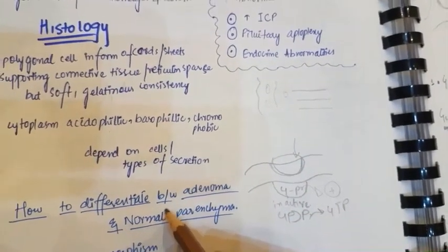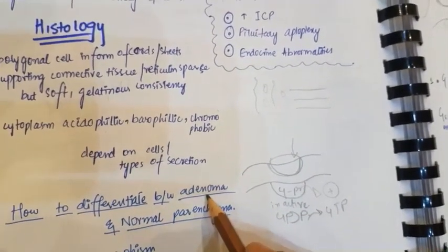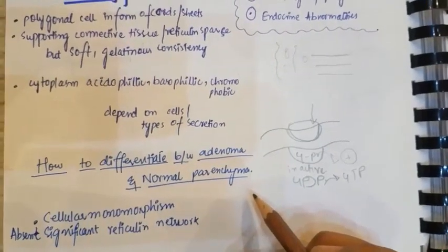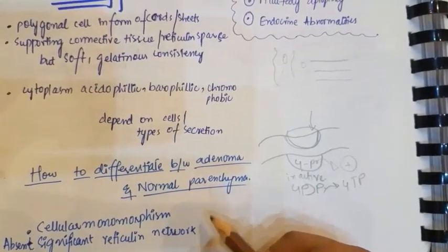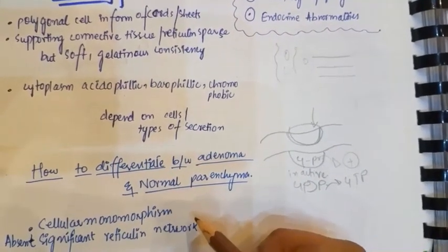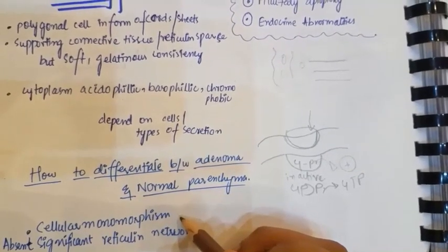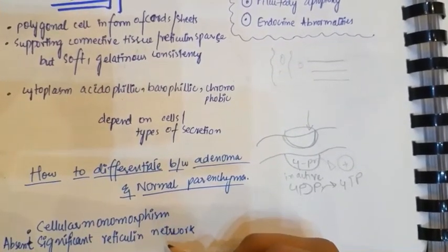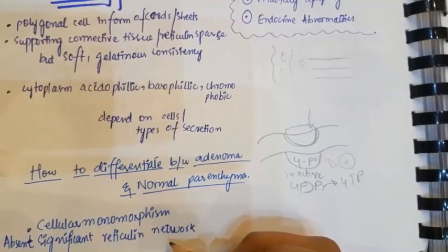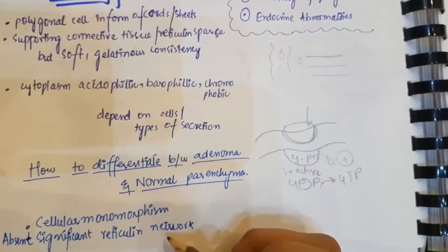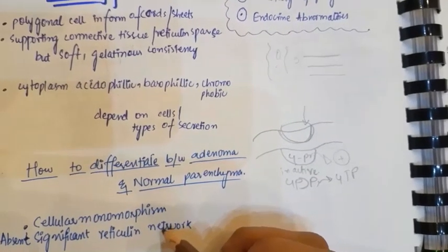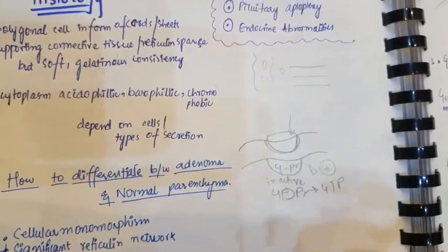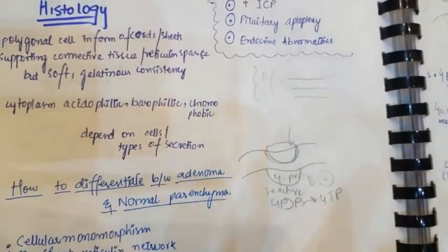To differentiate between adenoma and normal parenchyma: in the normal parenchyma there will be cellular monomorphism and there will be a significant reticular network between the adjacent structures, whereas adenomas lack this.